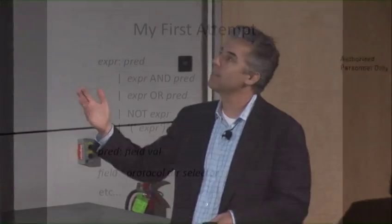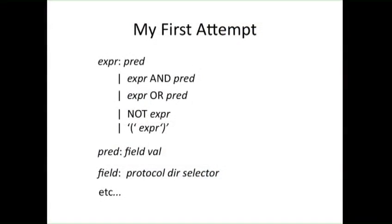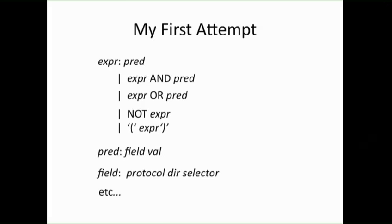Compiler construction tools can take a high-level representation of a grammar and generate a C implementation of the parser. It was straightforward to take the predicate concept and logical operations and write a grammar. The problem was Van didn't like it.